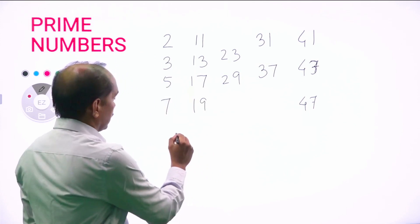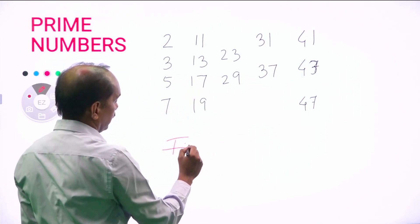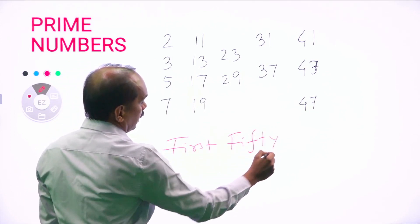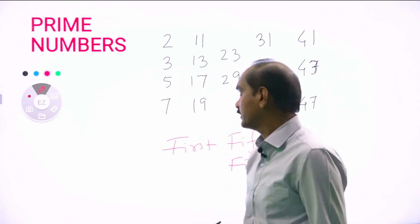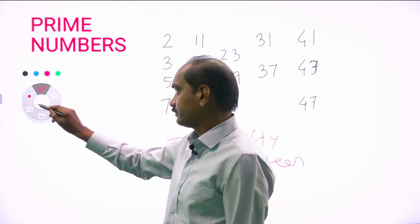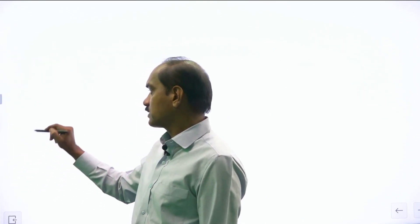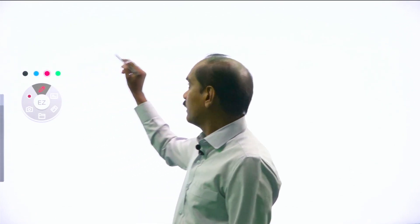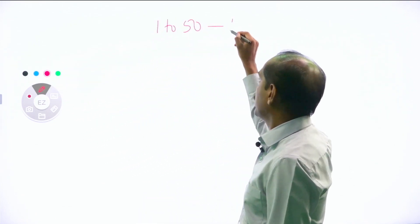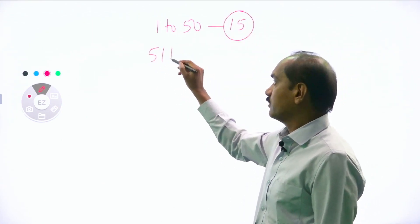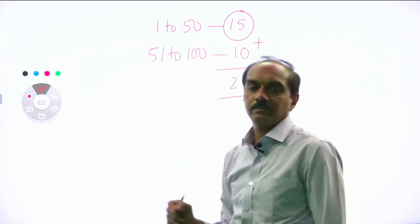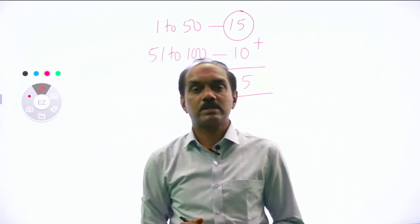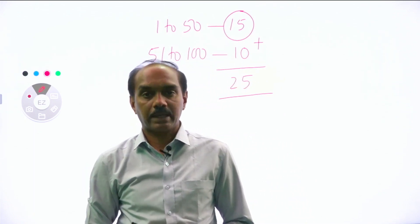How to remember this? In the first fifty, there are fifteen prime numbers. In the next fifty — that is 51 to 100 — there are ten more. So from 1 to 100, you will get to see twenty-five prime numbers, which are unbreakable numbers.